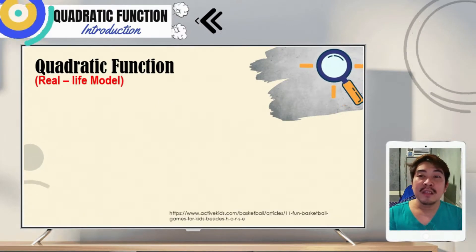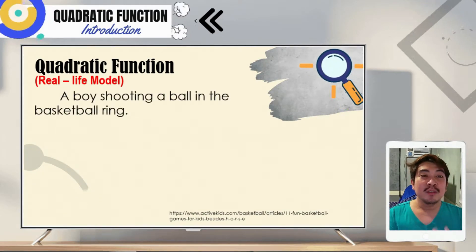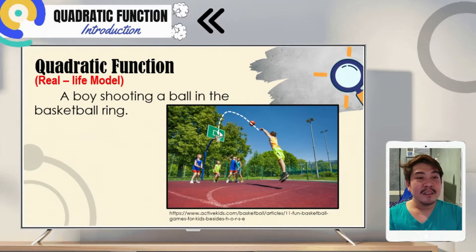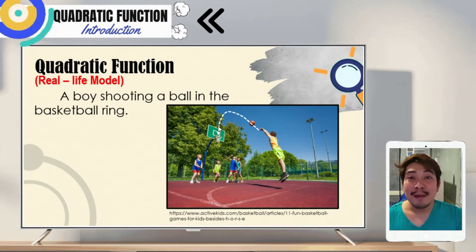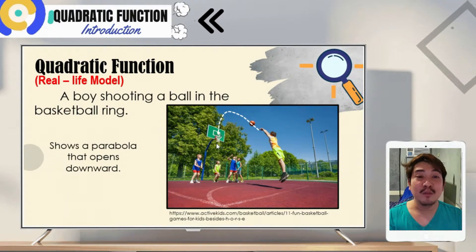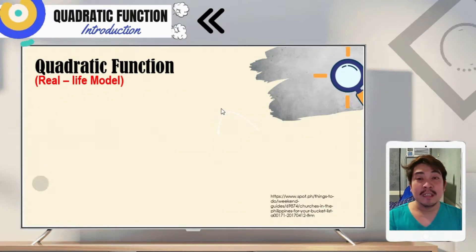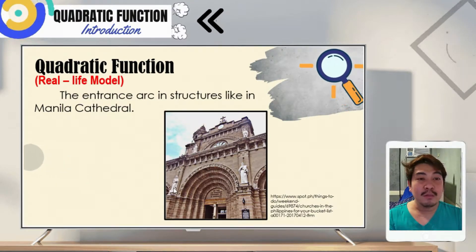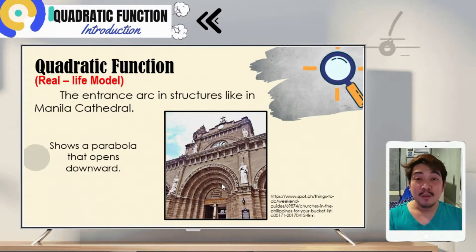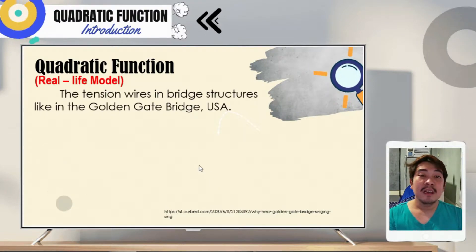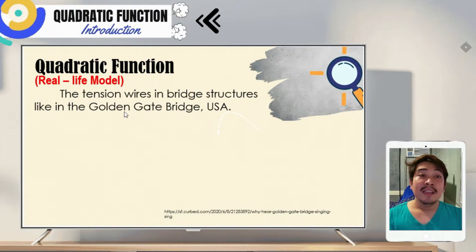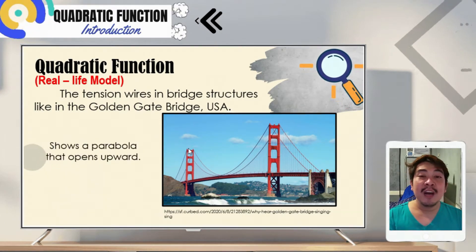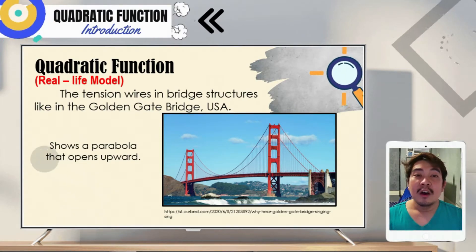Let us look at some real-life models of quadratic functions. One example is a boy shooting a ball toward a basketball ring — the trajectory of the ball forms a parabola that opens downward. Another is the entrance arches in structures like the Manila Cathedral, where the arches form a downward-opening parabola. We can also see quadratic functions in the tension wires of bridge structures like the Golden Gate Bridge in the USA, which form a parabola opening upward.